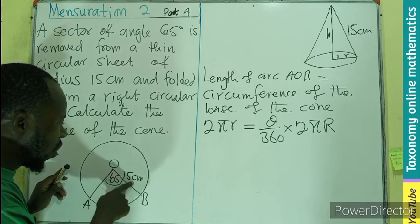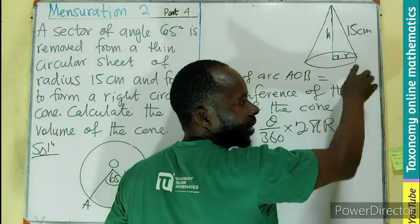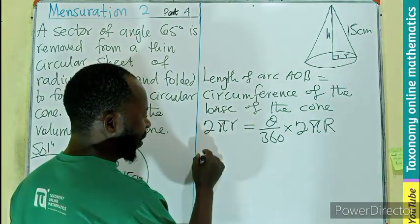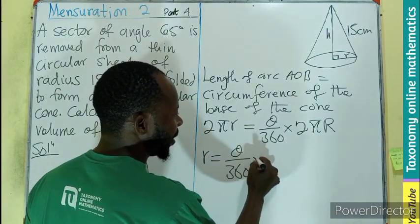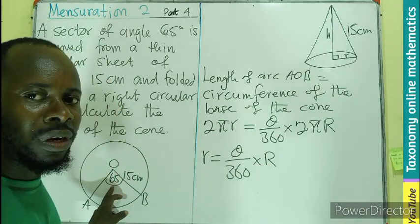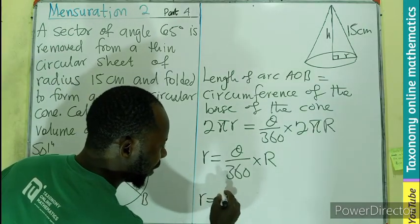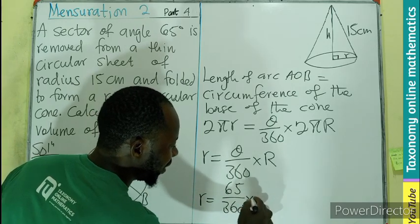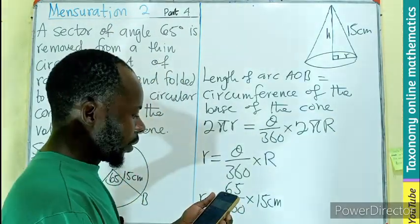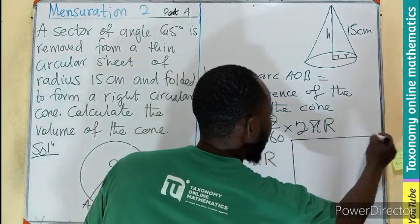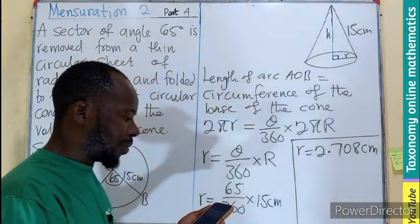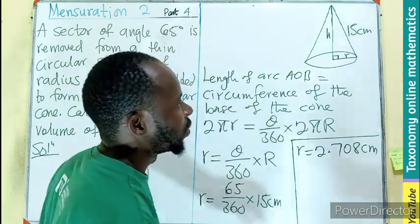Since 2π is common on both sides, we divide by 2π. That gives us r equals theta divided by 360 times R. In this case, R is 15 and theta is 65. So our radius of the base will be 65 divided by 360 times 15 cm. If we do that on our calculator, that gives our radius equal to 2.708 cm, which we can round to 2 decimal places as 2.71 cm.